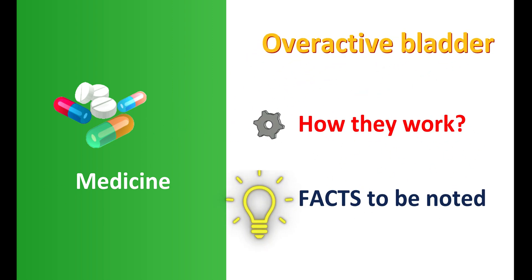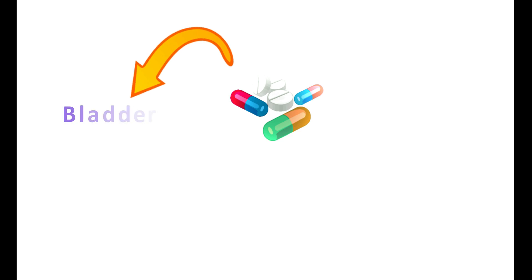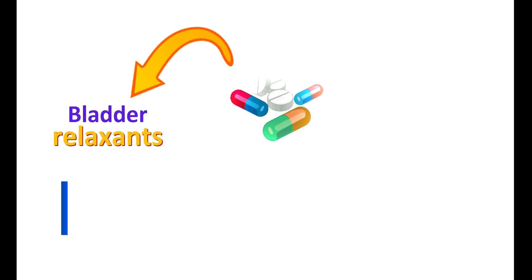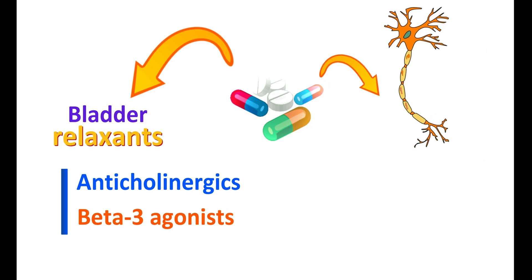Drugs used to treat overactive bladder act mainly in two ways. The majority of the drugs directly act on the bladder as relaxants. Anticholinergics and beta-3 agonists fall into this category. Other groups of drugs work either by modifying neuronal activity to bring bladder control back, or by restoring hormonal balance.